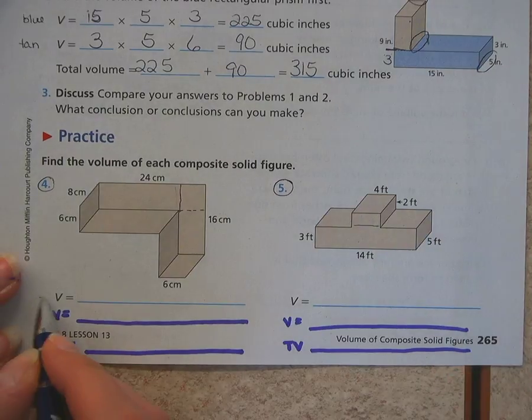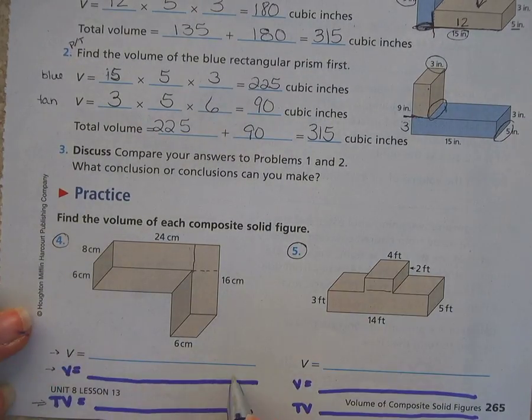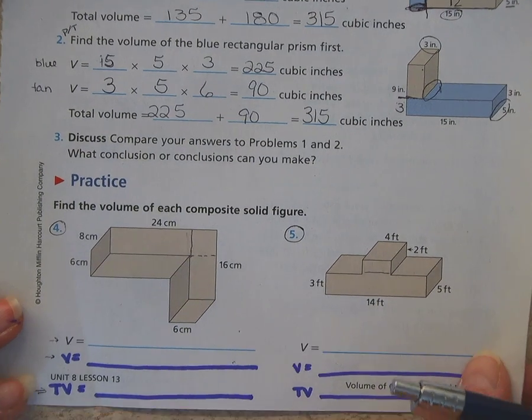So make sure, again, volume of one, volume of another, and we're looking for you to show your work like we did up there. And then, TV is the total volume. So you're adding your totals together. All right. So that's it on the front page. Now, if you flip it over.